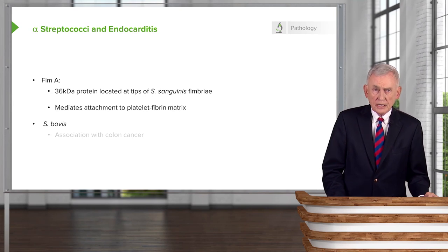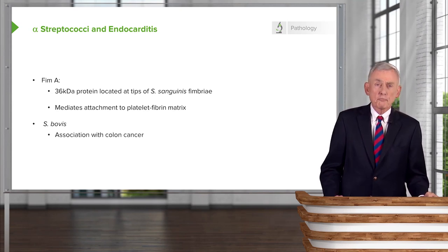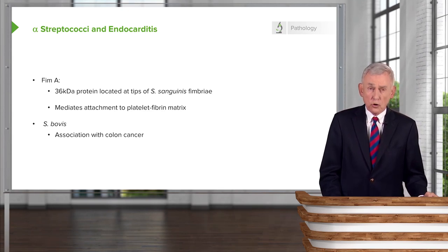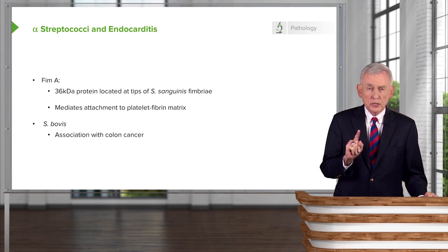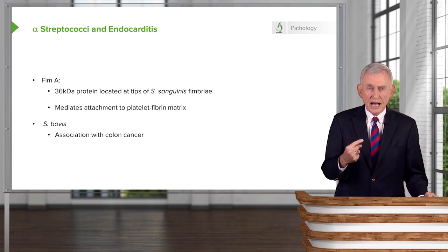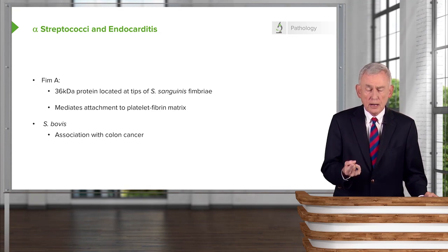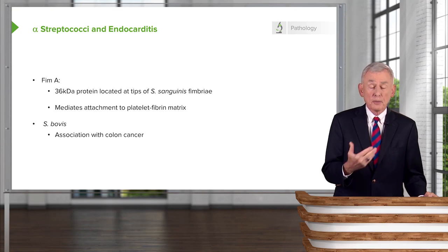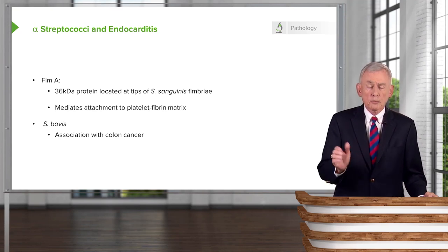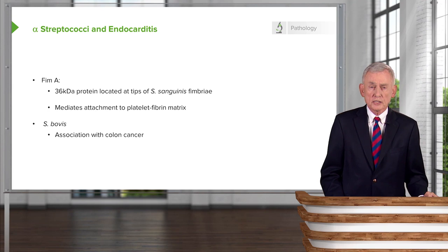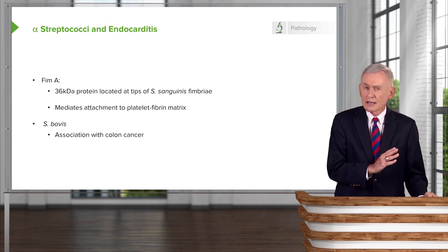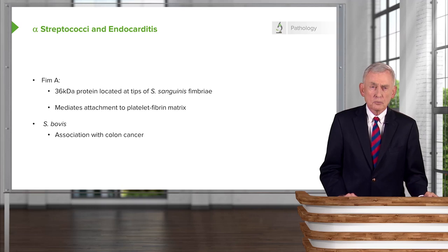Streptococcus bovis is notorious because when you have bacteremia or endocarditis due to that organism, you should ask yourself: does the patient have colon cancer? If I had a patient with Strep bovis infective endocarditis or even bacteremia, I would schedule that patient for a colonoscopy. That's the association — it's not all that common, but you would feel horrible if you missed it.